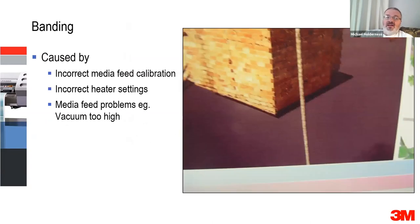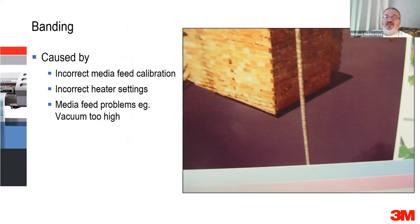Banding. We talked about banding before. It's normally caused by incorrect media feed calibration — the amount that the media is feeding forward as it comes out of the machine. It can also be a heat setting or a vacuum setting. Sometimes if you've got your heat settings wrong it can cause banding as well. The most common cause of banding is media feed calibration. If you're getting light or dark bands, check the feed calibration. Often you'll find you've turned the vacuum up or down for a particular material, so figure out what you've done and that will often solve it.